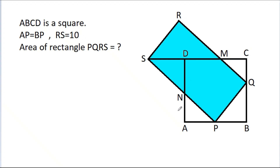In this video, we have been given that ABCD is a square and AP is equal to BP, and RS is 10. Then we have to find the area of rectangle PQRS.